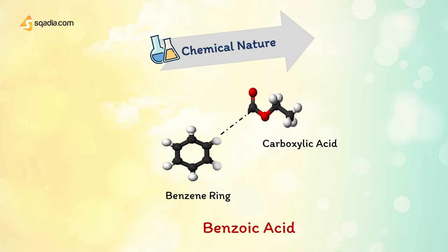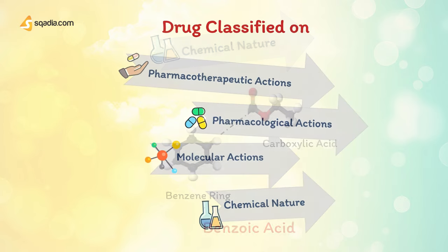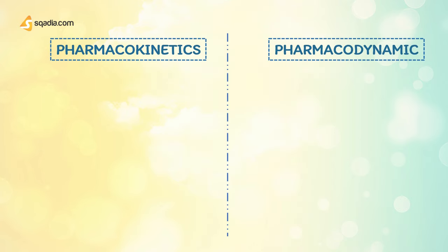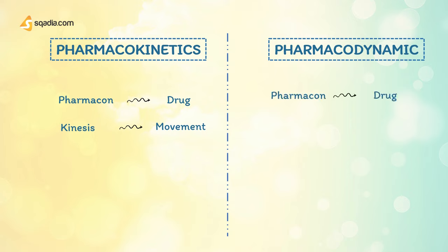So, how do drugs work? There are two ways to see this phenomenon: pharmacokinetics and pharmacodynamics. The word pharmacokinetics is derived from the Greek words pharmakon, meaning drug, and kinesis, meaning movement — so pharmacokinetics means drug movement. Pharmacodynamics is derived from pharmakon, meaning drug, and dynamics, meaning power — so pharmacodynamics means drug power.